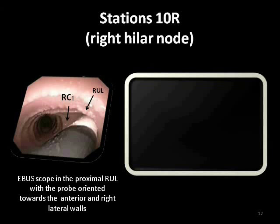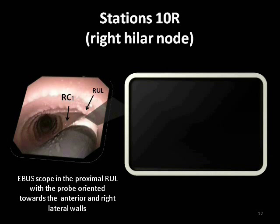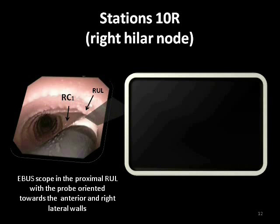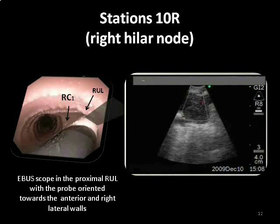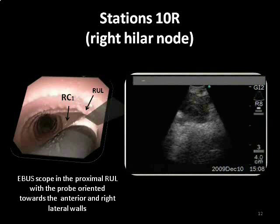The EBUS scope can be gently advanced from the carina to the origin of the right upper lobe bronchus. The transducer is oriented anterolaterally towards the 2 o'clock position. The lymph node is visualized in front of the normal lung.